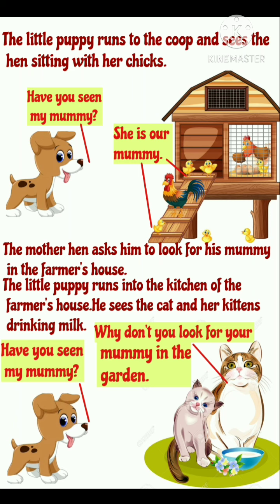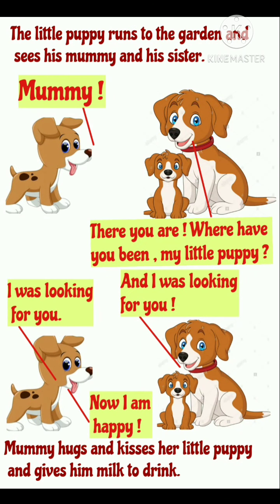तुम अपनी mummy को garden में क्यों नहीं ढूंढते? The little puppy runs to the garden and sees his mommy and his sister. अब क्या था? Puppy garden की तरफ दौड़ता है, और वहाँ पर उसे उसकी mummy और sister दोनों मिल जाती हैं. एकदम से उसके मुँह से निकलता है — Mommy, there you are! Where have you been, my little puppy? अब उसकी mummy बोलती है — तुम कहाँ थे, मेरे little puppy?